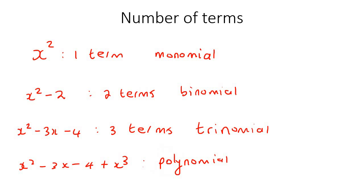Poly means many. So that could be 100 terms, 500 terms, four or more. We call it a polynomial.